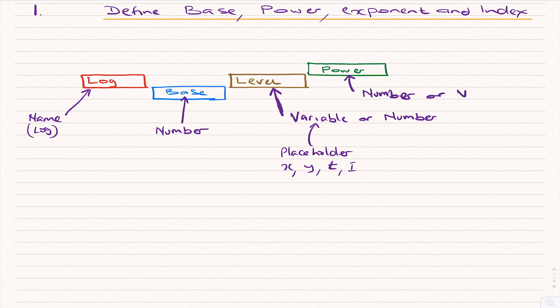So that's what logs look like. I'm going to write two expressions of logs that you can see - one involving numbers and one involving variables as level or power. You always have the name log, the base will always be a number. So log to base 10, the level can be 3, and the power can be x.